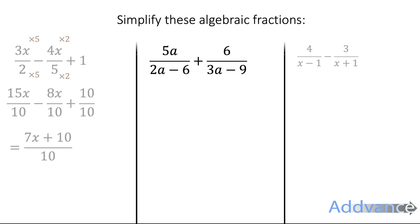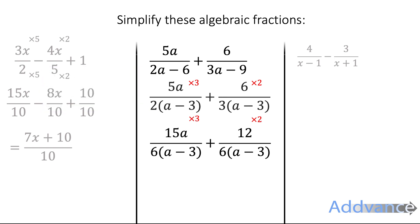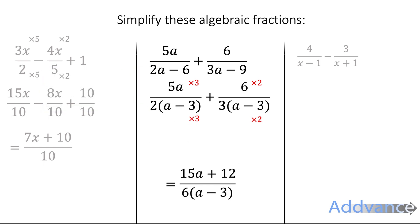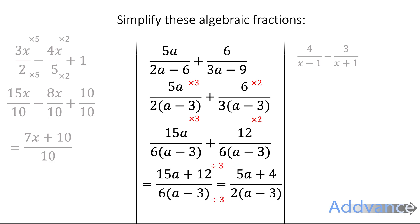Now we've got this fraction, and we're going to factorise the bottom — it's always a good idea to factorise when you've got something complicated on the bottom. To make a common denominator, we're going to multiply by 3 and multiply by 2. Then we just add the top, and we can divide the top and the bottom by the same thing — dividing by 3 and by 3. We're left with 5a plus 4 over 2a minus 3.